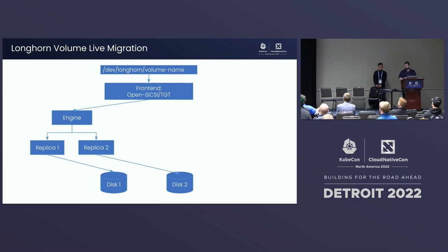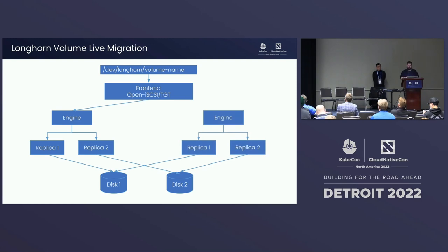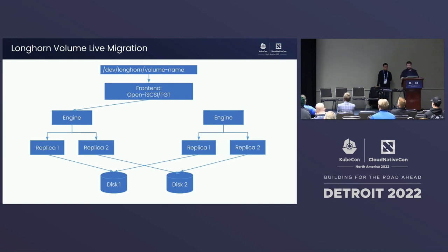We have a live migration feature - technically two. The first is for Harvester virtual machine live migration. The challenge with file systems is you can't have ReadWriteMany mode unless you have a distributed file system. What we can do is run two parallel engines and do a handover. We also use this approach for live engine upgrades - any time you upgrade to a new Longhorn version with engine improvements, we create mirror processes from the original set and do a live handover, then switch the frontend over to the new mirror processes and let the old ones go away.